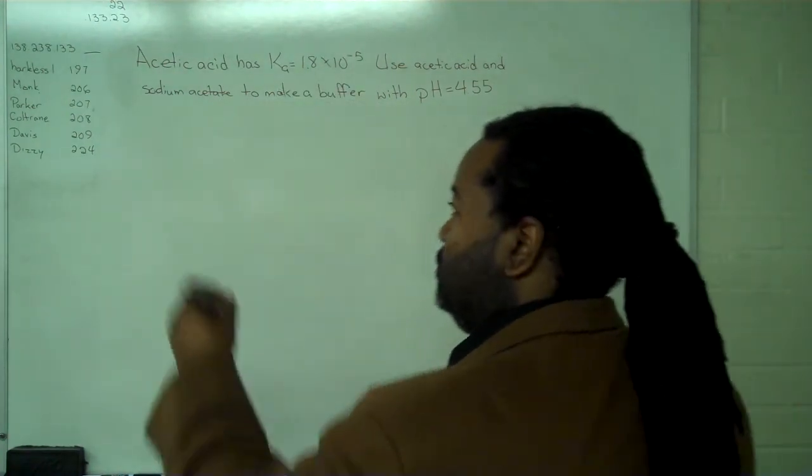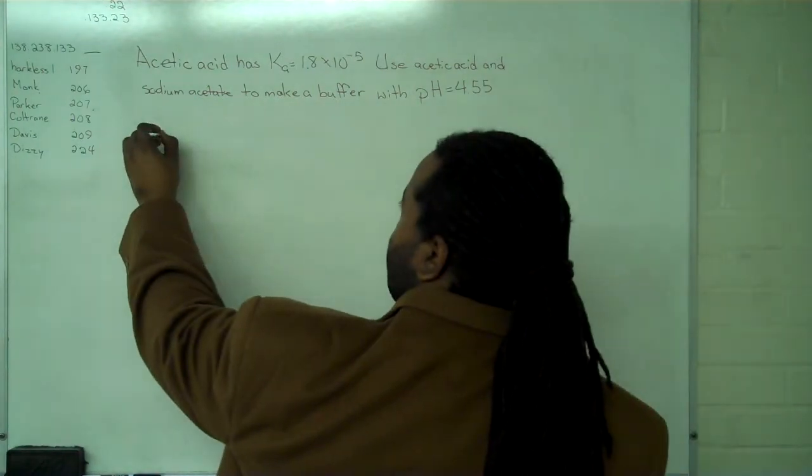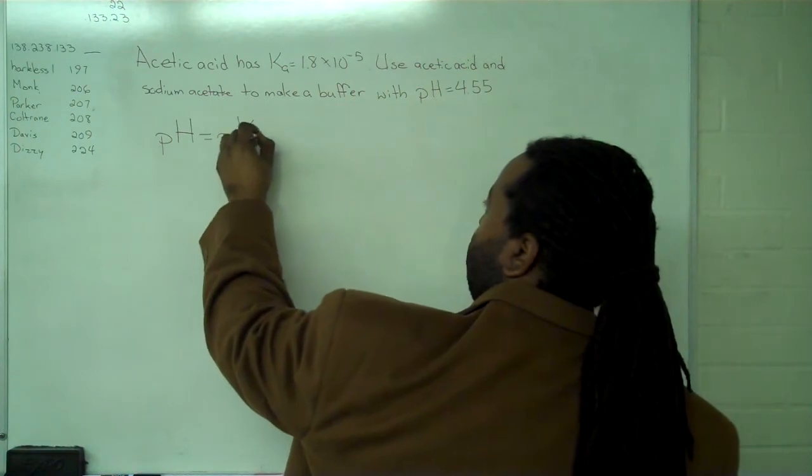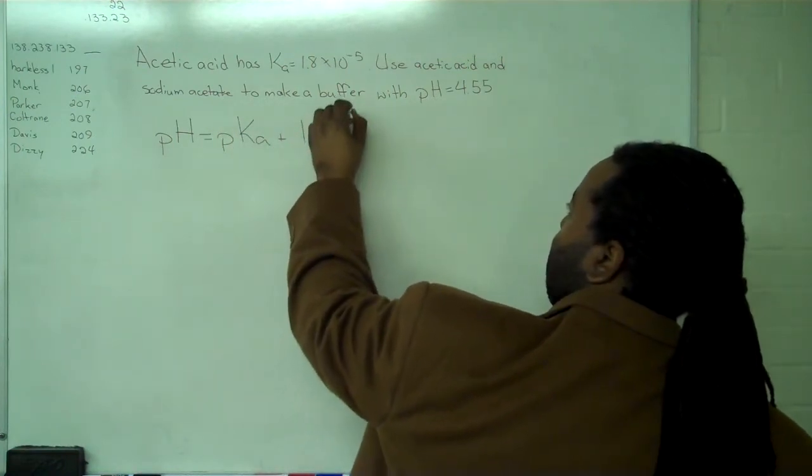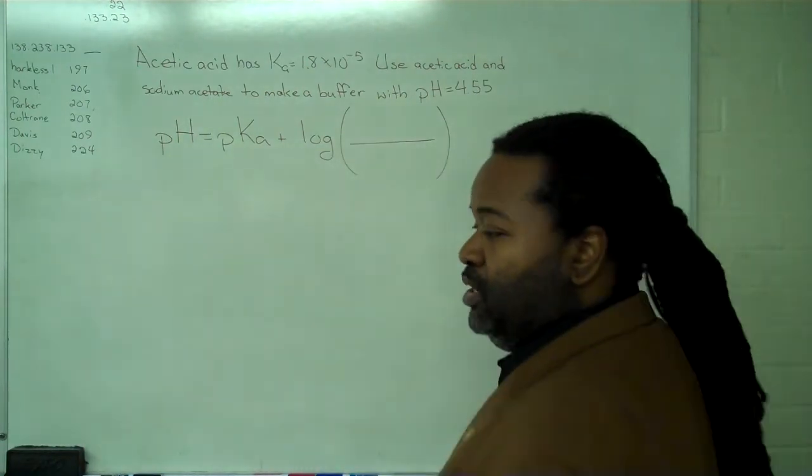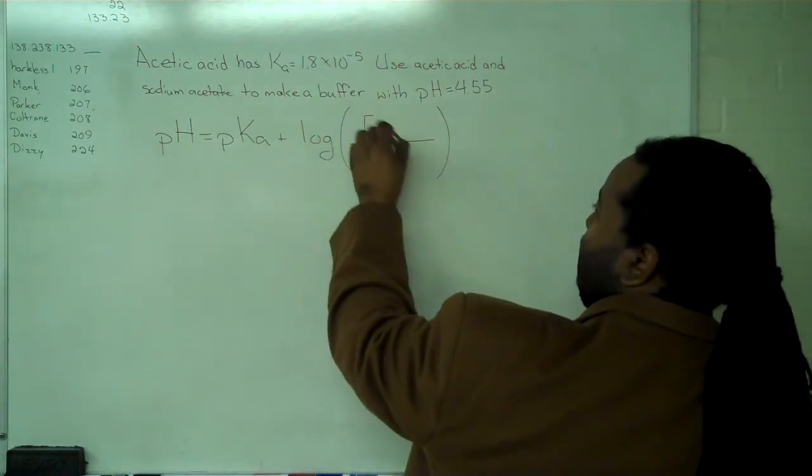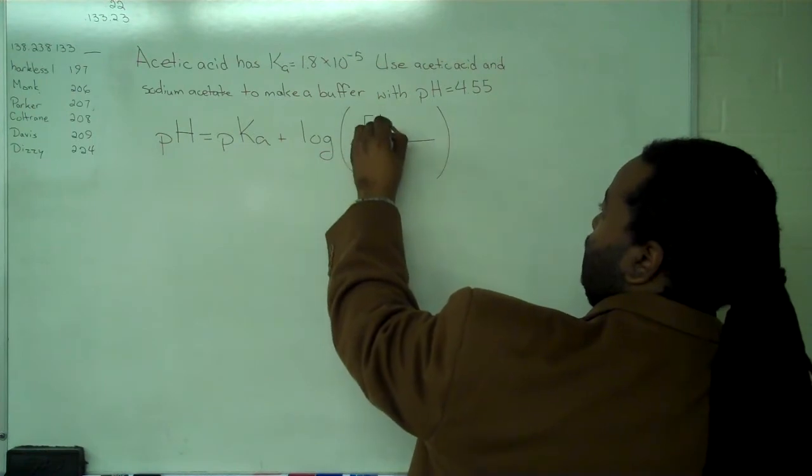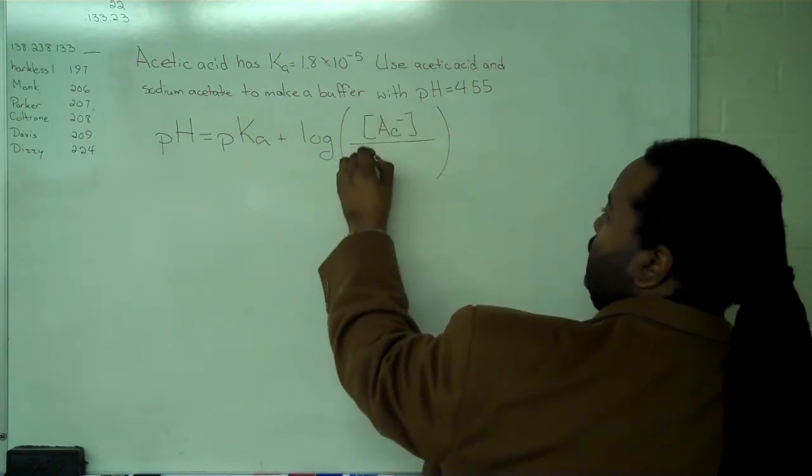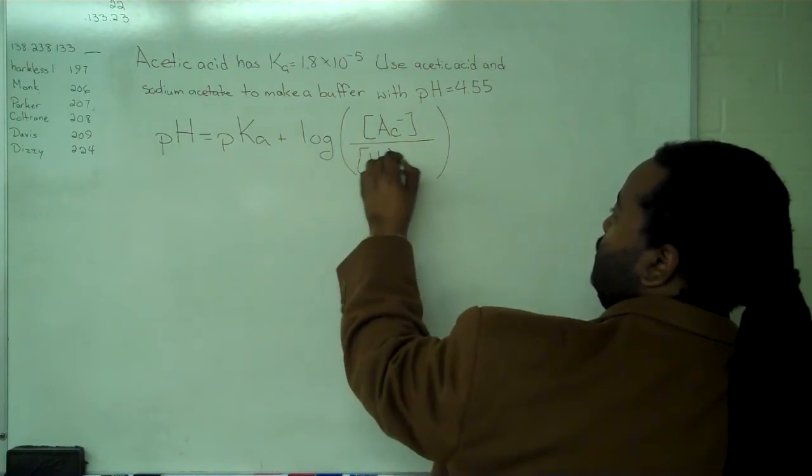With this information, we can write the Henderson-Hasselbalch equation: pH equals pKa plus the log of the ratio of these two components. We'll have the acetate ion from sodium acetate over the undissociated acetic acid.